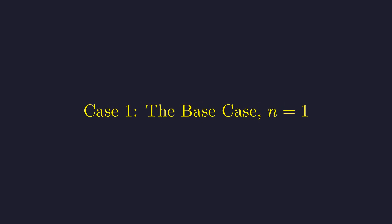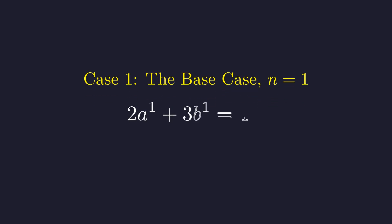Let's start our investigation with the simplest possible case when the integer n is equal to one. Substituting n equals one into the equation gives us this. Of course, raising a number to the first power doesn't change it, so the equation simplifies to a linear Diophantine equation. To confirm that n equals one is a valid solution, we only need to find one set of positive integers a, b, and c that works.